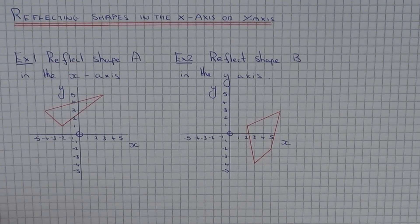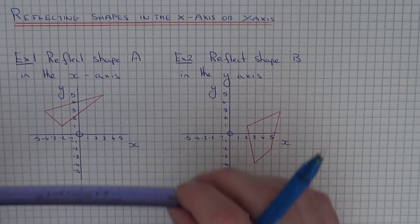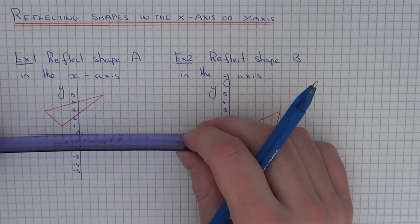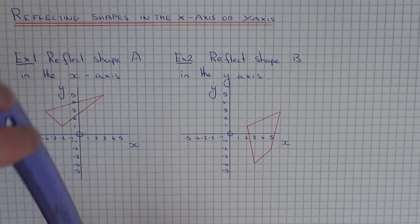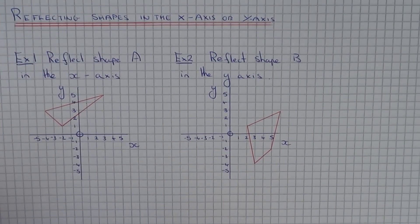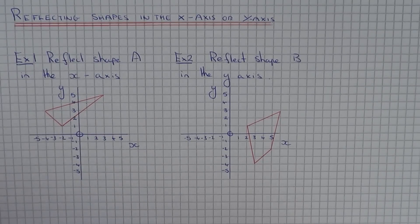If a question asks you to reflect a shape in the x axis or the y axis, then the x axis or y axis will be acting as the mirror line. So the first thing you want to do is just go over the x or y axis and make it clear where your mirror line is.